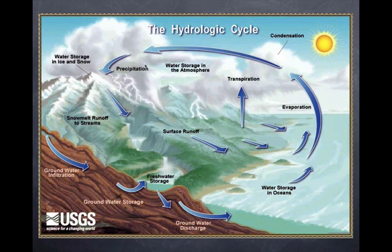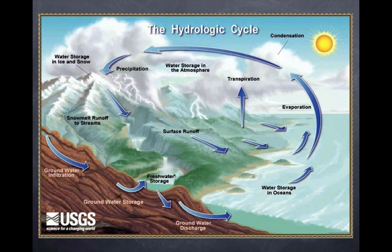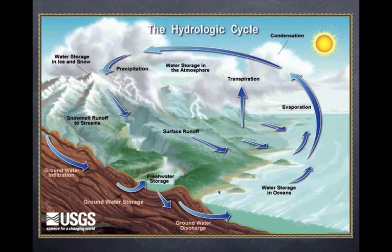Those clouds will at some point precipitate — snow, rain, whatever. You can have water storage in the form of ice and snow, glaciers, as well as water storage in the oceans. Once you get runoff to the streams, you can have evaporation as soon as it's on the surface, and evaporation from bodies of water. When it precipitates, you have groundwater infiltration, which can lead to groundwater storage as well as groundwater discharge — the groundwater eventually making its way out to a body of water.